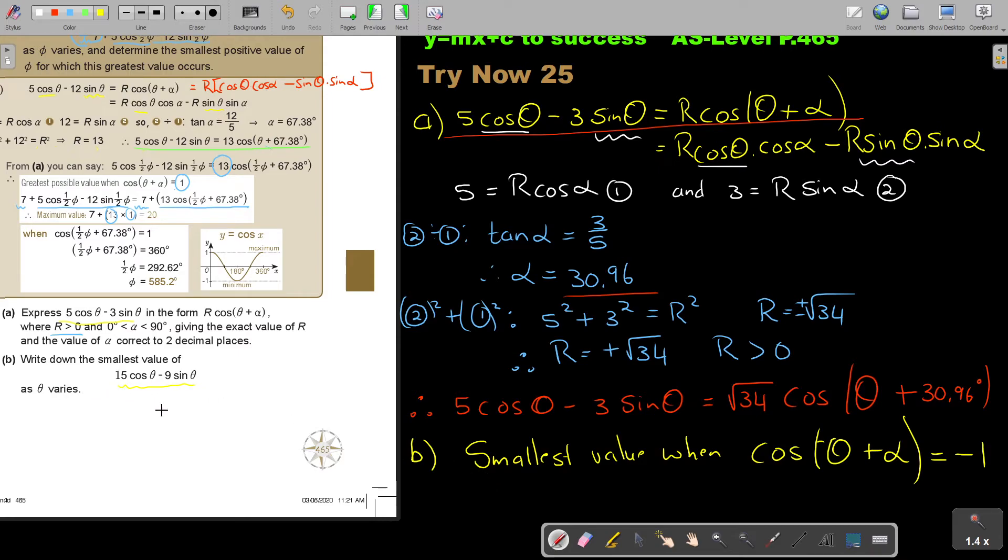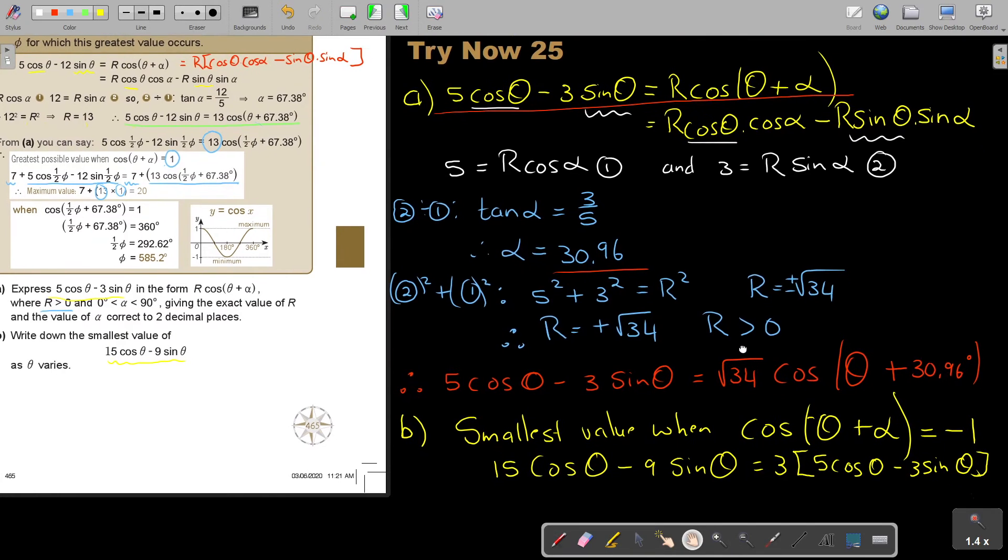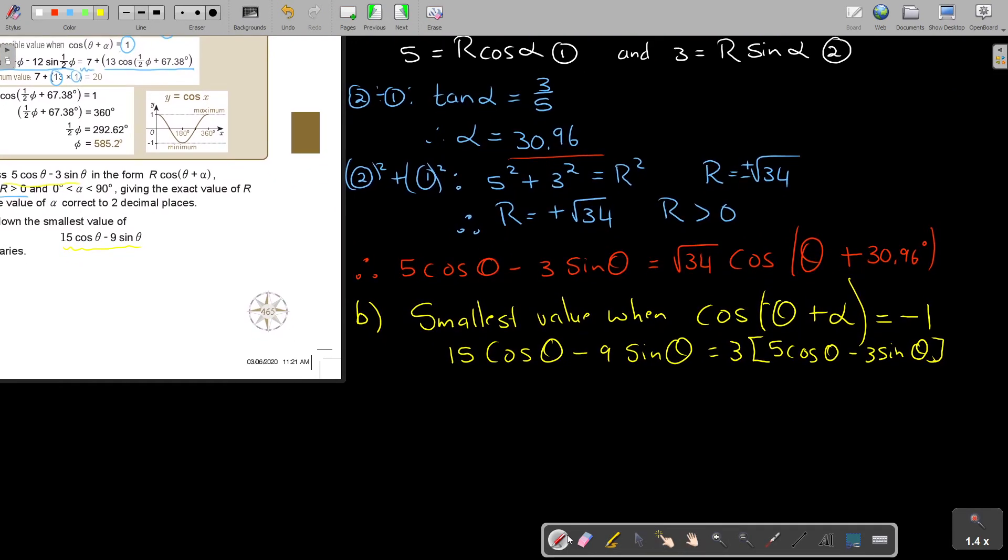So now I use that statement. So 15 cos theta minus 9 sin theta is actually just 3 times, do you agree, 3 times this, 5 cos theta minus 3 sin theta. Let's just move up. And that, in the place of that, I can now put this.